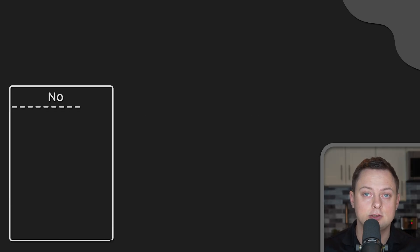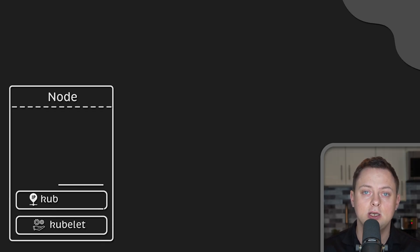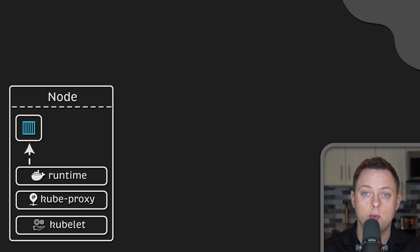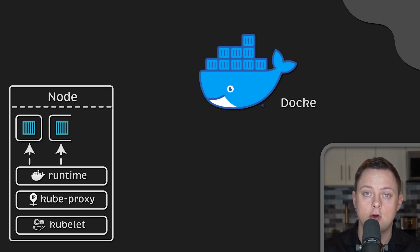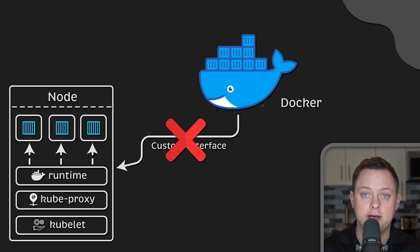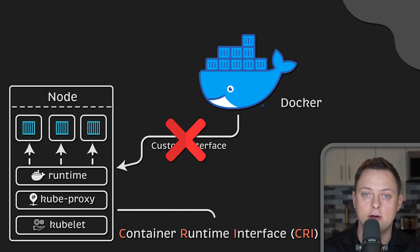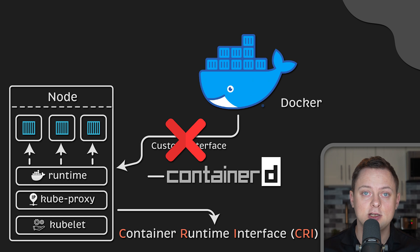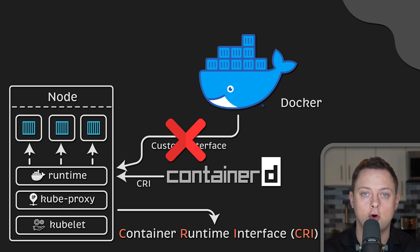Kubelet doesn't run containers directly — it uses a container runtime. For a long time, we had to install the Docker daemon on every single node to run containers. Recently, Kubernetes deprecated Docker and developed the generic Container Runtime Interface. One of the most common open-source projects used as a container runtime nowadays is containerd. It implements that runtime interface and needs to be installed on every node. It is responsible for managing the execution and lifecycle of containers within the Kubernetes environment.